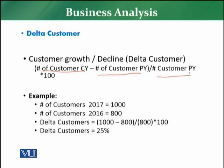If the delta is negative, it means the number of customers has declined versus the previous year. For example, in 2017 there are 1000 customers and in 2016 there were 800 customers. Applying the formula: 1000 minus 800, divided by 800, multiplied by 100 — delta customers equals 25%.